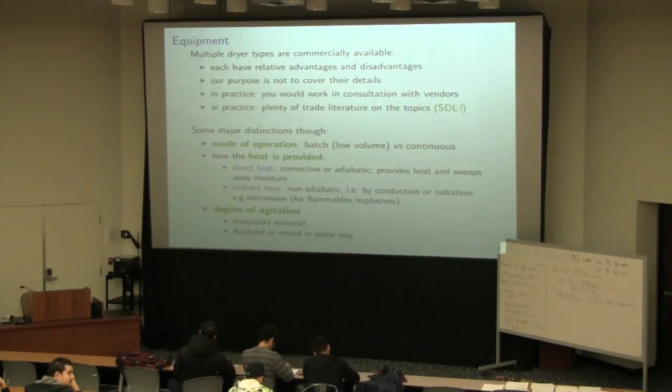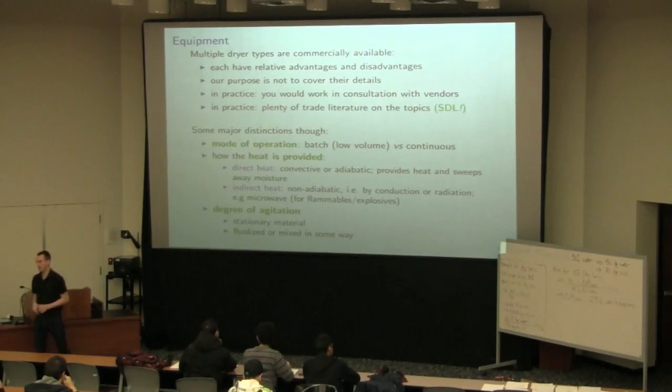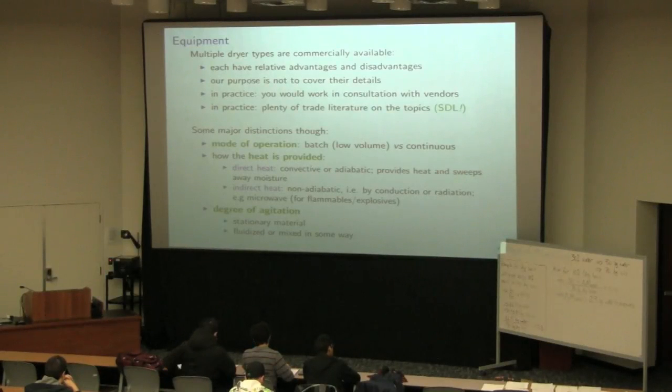Just understand that the aim here is not to cover exhaustively what these dryers look like and how they operate. But in general they operate in two modes: batch and continuous. Batch being typically for low-volume production. One other way we can look at considering our dryers is how the heat is provided. We're providing it directly through an air stream. So there's convection taking place there and it's an adiabatic operation. The heat of vaporization is being provided by the air stream itself. It's sweeping away that moisture. Some operations are not adiabatic. We provide radiation to the system where we use microwaves or different frequency wavelengths of electromagnetic wavelengths to excite the molecules.